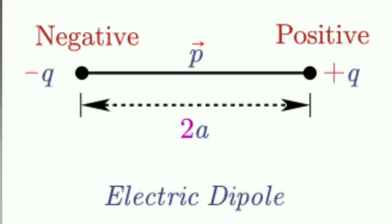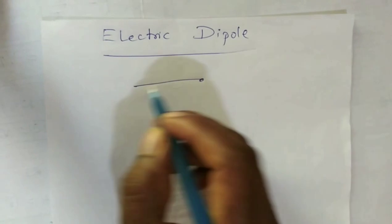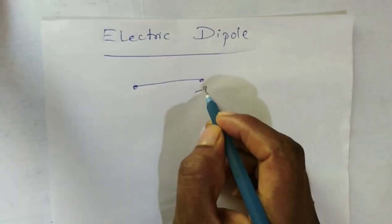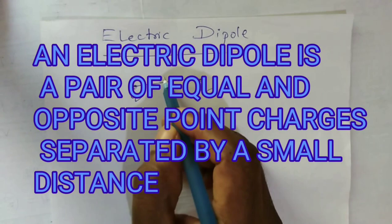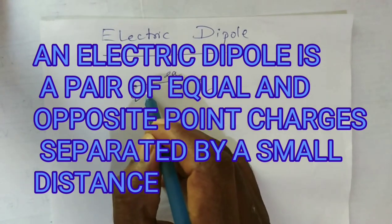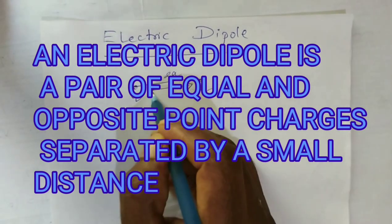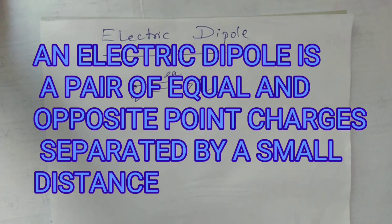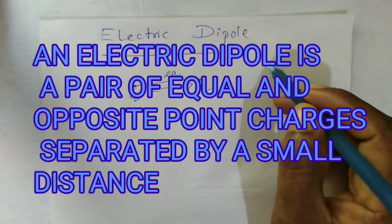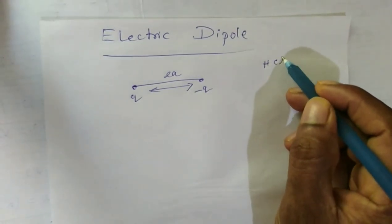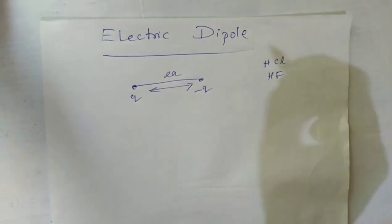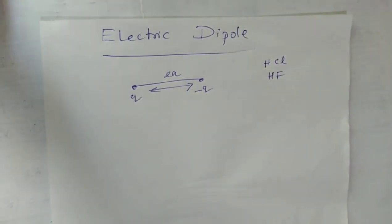Hello, in today's class we are going to discuss a few things about electric dipole. An electric dipole consists of two charges that are opposite in magnitude with a small distance in between. Many molecules such as HCl and hydrogen fluoride act as dipoles, having a positive charge and a negative charge.